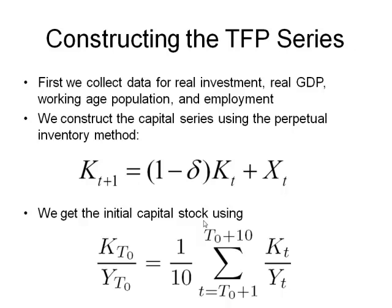But how do we calculate the TFP series? We'll go over that in the next slide. But first, we're going to talk about constructing the capital series. So we collect data for real investment, real GDP, working age population, and employment. Those are the four main data series you need to do the growth accounting. We'll need the first two — real investment and real GDP — to construct a capital series.